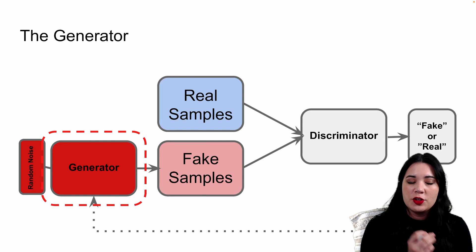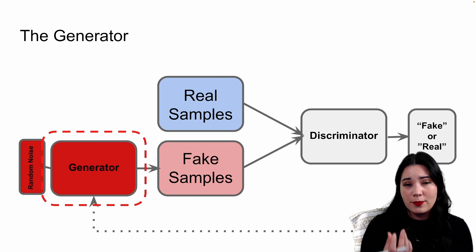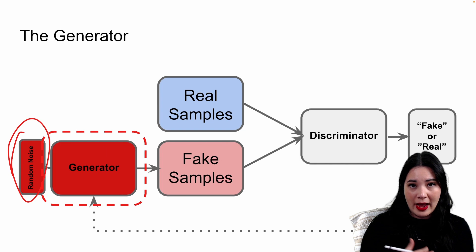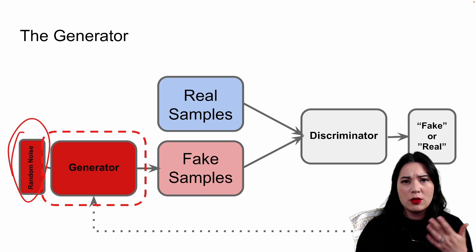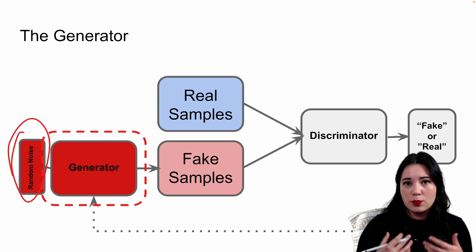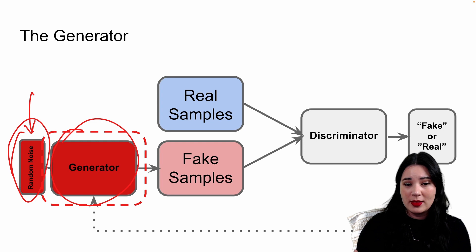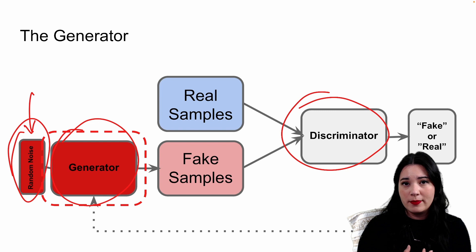The generator is a bit more complicated. The generator is trying to create fake examples, but the only way we can tell if it's done that successfully is if it can trick the discriminator into thinking that fake samples are real. The generator creates fake images by taking in random noise, usually from a uniform distribution, inputting it into the generator, and then outputting something that looks like a fake example. At first, the generator is going to be pretty bad and its examples would be very easily distinguishable from real samples. But that feedback is crucial because we use the discriminator's decisions to train the generator into producing better outputs.